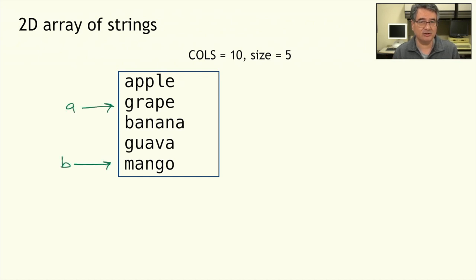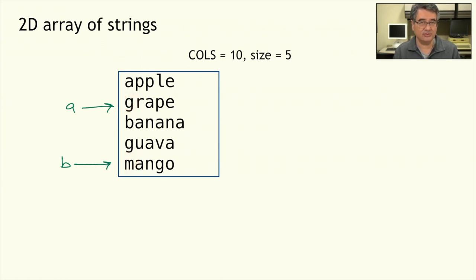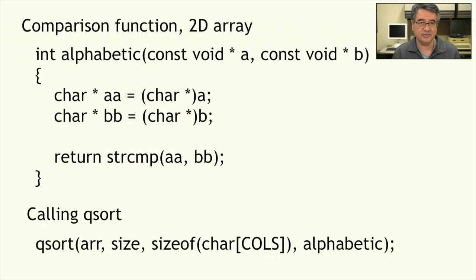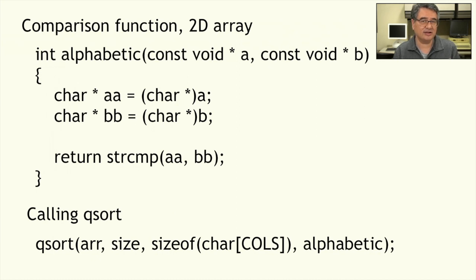For example, at some point during the sorting, A will point to 'grape' and B will point to 'mango', and these will be handed off to our comparison function. In this case, A and B are both character pointers because they point to the first letter of each string. They're going to come into our comparison function as void pointers, and the first thing we'll need to do is cast them to be the correct type — which in this case is a character pointer. Here's the comparison function, which I've called 'alphabetic' because it's going to sort the strings into alphabetical order. A and B come in as void pointers; we cast them to character pointers AA and BB, and then hand them off to strcmp, because that's already the kind of values it expects.